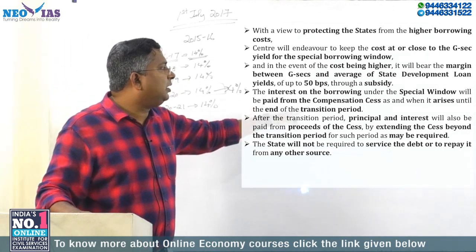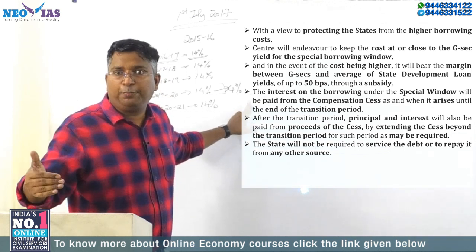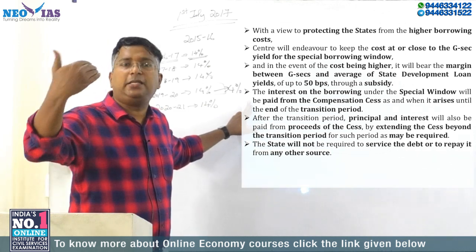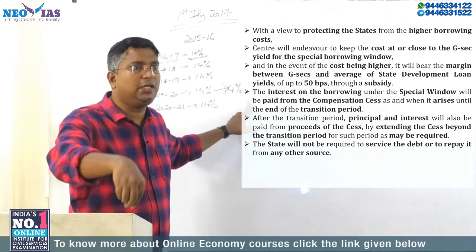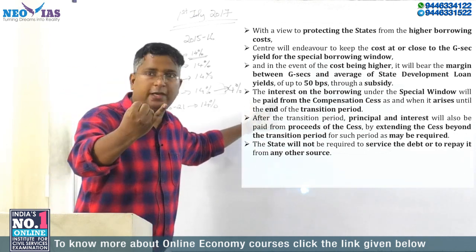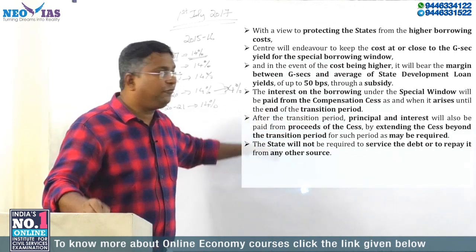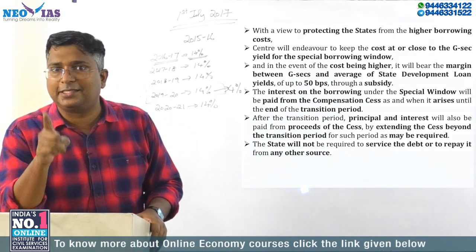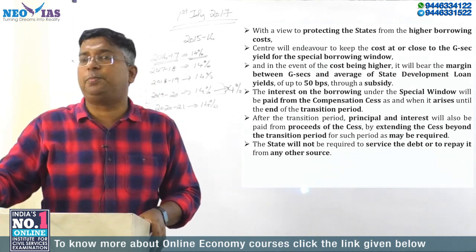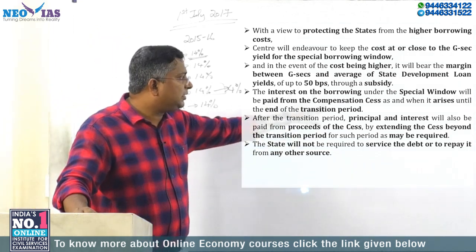Now, regarding the interest on borrowing under the special window — this is very important. Under the special window program, Rs. 1.1 lakh crore will be borrowed by the center on behalf of the states for meeting the GST revenue shortfall due to implementation. The interest on this borrowing under the special window will be paid from the GST Compensation Cess. If you choose option one, interest and the principal will be paid from the compensation cess.